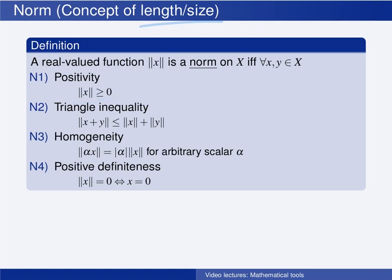The second condition states that the length function has to satisfy the triangle inequality, meaning that the length of the sum of two elements cannot be larger than the sum of the length of each of the elements. Think, for instance, of the length of a two-dimensional vector, which we can draw as an arrow in a two-dimensional coordinate frame, and which is the sum of two vectors x and y. Then the triangle inequality says that the length of this vector has to be smaller than or equal to the length of vector x plus the length of vector y.